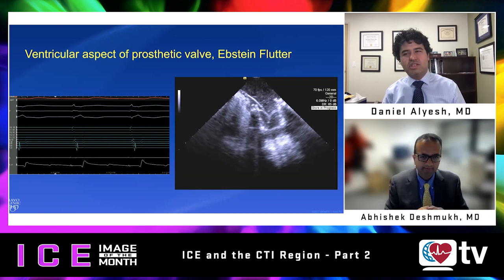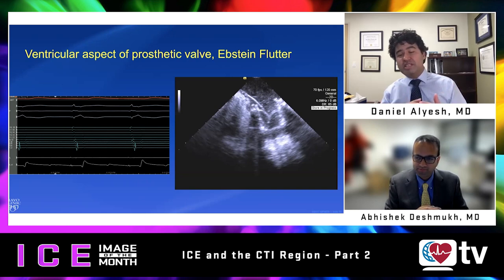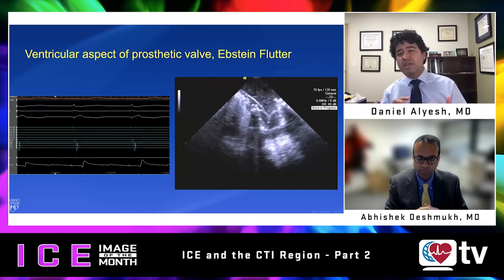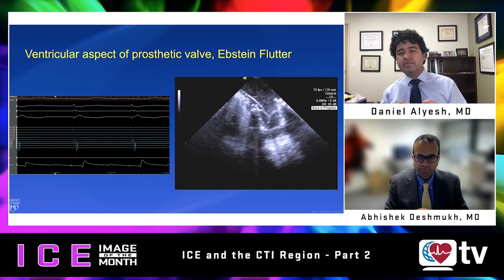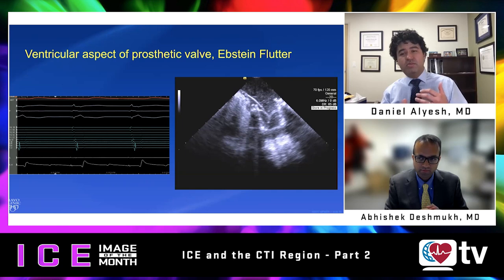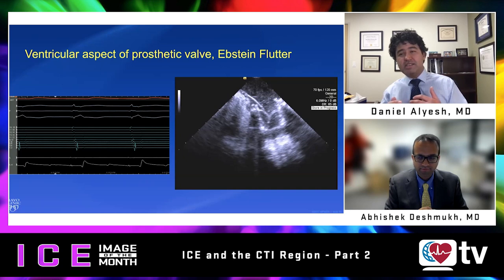To summarize: we jokingly called it the Michigan loop but did not think we were the only ones doing it. The cavotricuspid isthmus is a complex and underappreciated anatomy — often a single pass can get CTI block, but if you're having trouble, think about ridges, pouches, and small cardiac structures. We are advocating for understanding the anatomy with ICE, not necessarily for every case, but understanding the course of the right coronary artery is paramount. There are unfortunately reports of inferior MI associated with CTI flutter ablation.